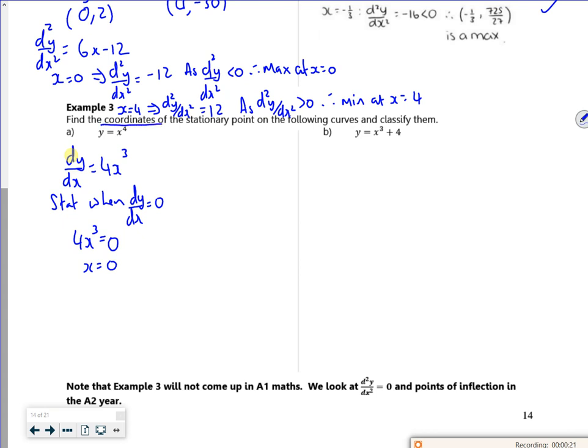I want the coordinates. If I put x is 0 into there, it is equal to 0, 0. If I differentiate it again, I get 12x squared. So if x is 0, d2y by dx squared is also 0.